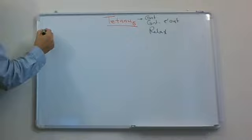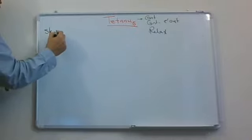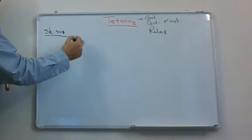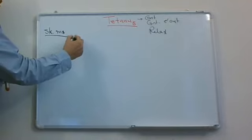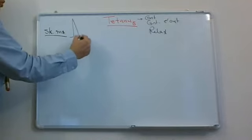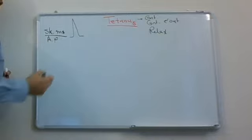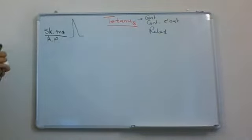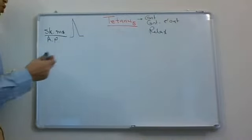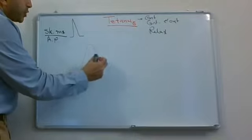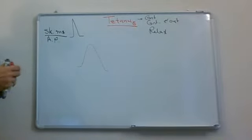If we look at the skeletal muscle, when stimulated by a nerve impulse, it generates an action potential in the form of depolarization and repolarization. In response to this electrical change, we have a mechanical change consisting of contraction and relaxation — a muscle twitch.